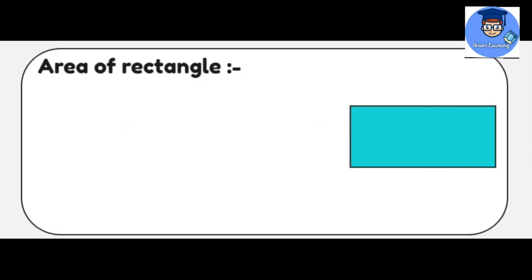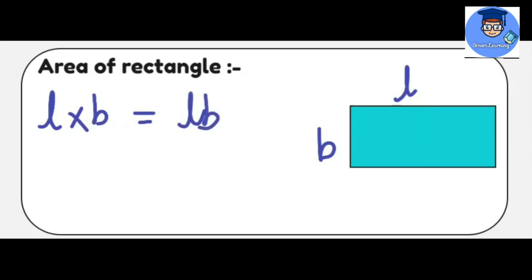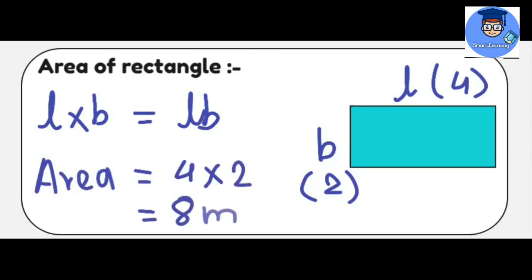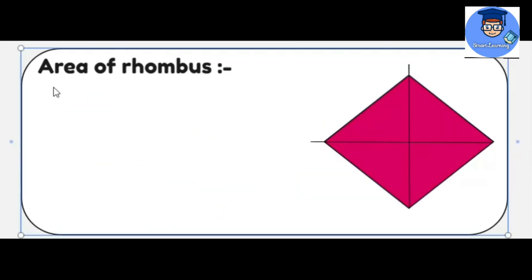Now we will learn about the area of a rectangle. To find out the area of a rectangle, we will need length and breadth. Let the length of this rectangle be L and the breadth be B. The area of the rectangle will be length multiplied by breadth, that is L times B. For example, if the length is 4 meters and the breadth is 2 meters, the area of the rectangle will be 4 multiplied by 2, that is 8 meter square.